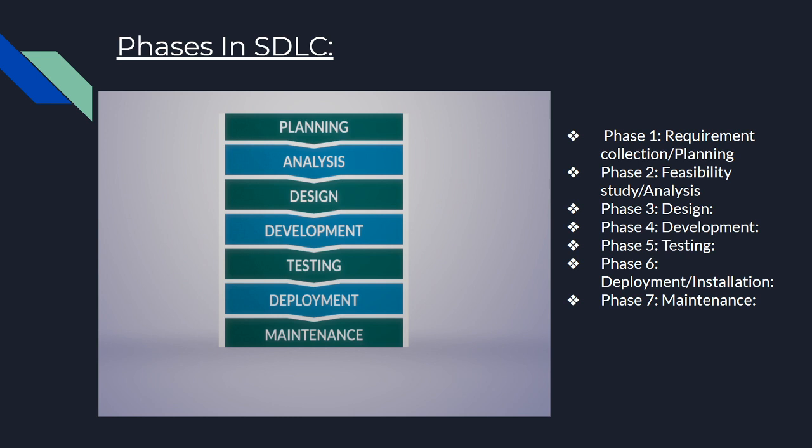There are different phases in SDLC through which a software application needs to go. The first phase is Requirement Collection and Planning, the second is Feasibility Study or Analysis, the third is Designing, the fourth is Development, the fifth is Testing, the sixth is Deployment or Installation, and the last is Maintenance. Through these phases every software needs to pass.